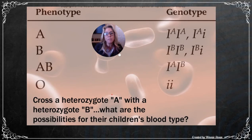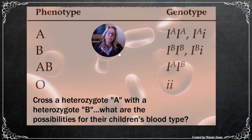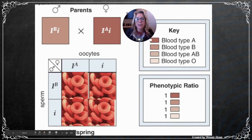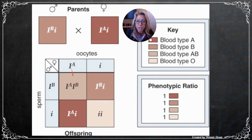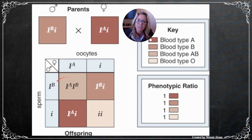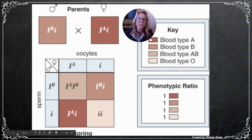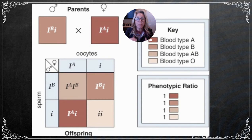Practice problem: cross a heterozygous type A (I^A i) with a heterozygous type B (I^B i). The possible offspring genotypes from the Punnett square are: I^A I^B (type AB blood), I^B i (type B blood), I^A i (type A blood), and ii (type O blood). These results show the statistical probabilities for offspring, not that they must have exactly four children.